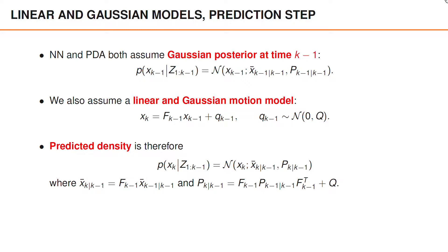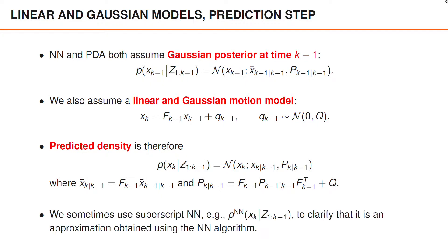Note that we can handle non-linear motion models by approximating the predicted density as Gaussian — for instance, using an extended Kalman filter. We therefore sometimes use the superscript nn when the approximation to the posterior density is computed using the nearest neighbor algorithm.